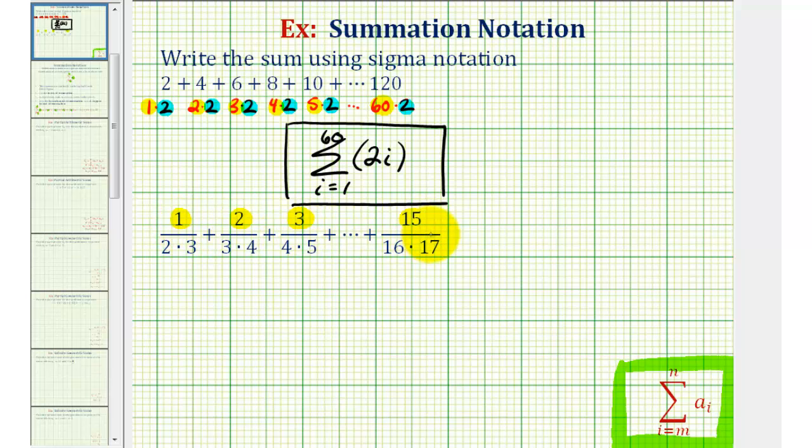So we can use this as our index or the variable in the formula. And then looking at the denominator, notice how the first factor is always one larger than the numerator, which would be our index i. And then the second factor is always two larger than the numerator or our index.